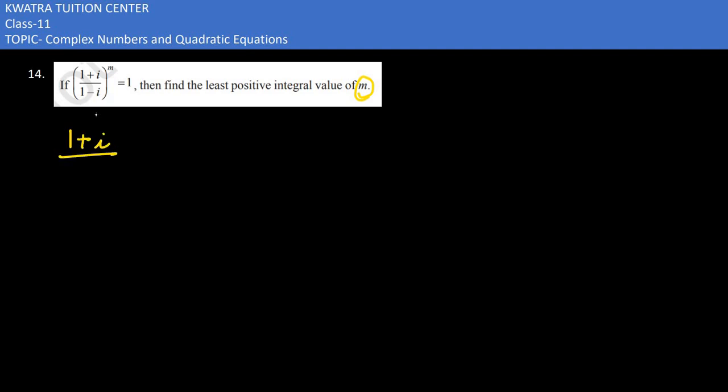Just rationalize the term you have within the bracket. The term in the bracket is 1 minus i, and you multiply or divide by 1 plus i. Power m equals 1. You need to multiply 1 plus i and 1 plus i together.